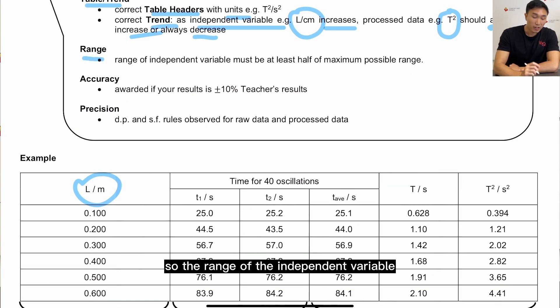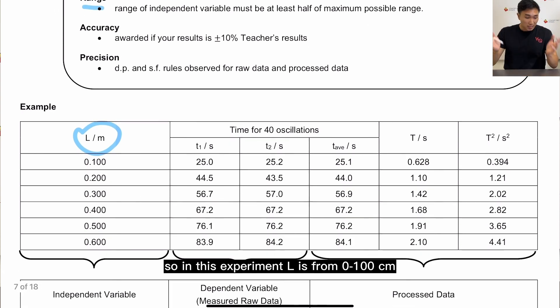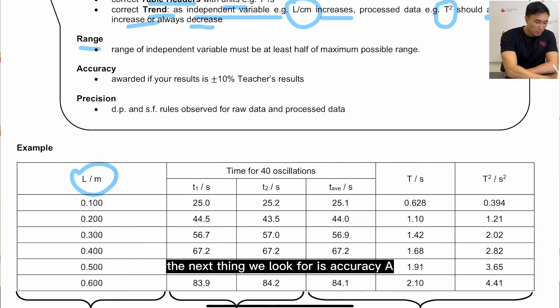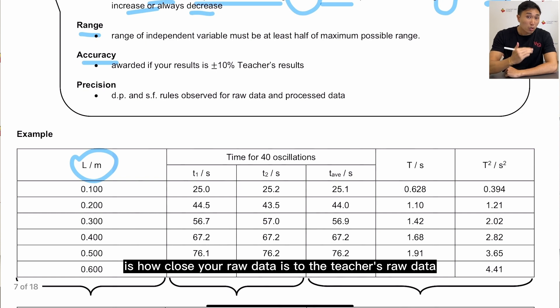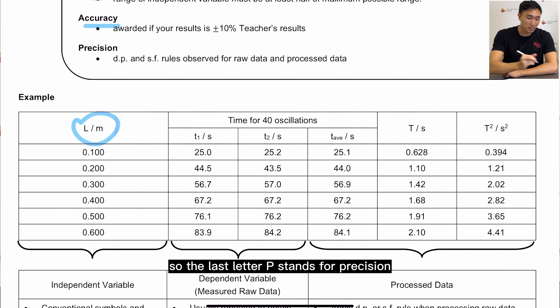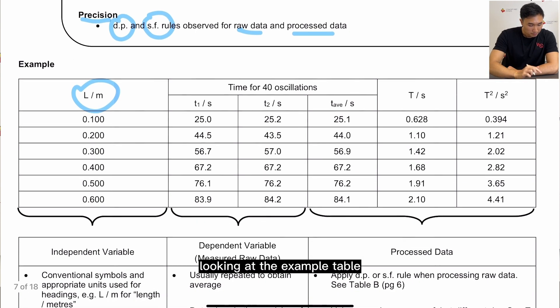So the range of the independent variable must be at least half of the maximum possible range. So let me give you an example. So in this experiment L is from 0 to 100 cm. We are using a meter rule here, so half the maximum range is minimum of 50 cm, and that should be within your data set. The next thing we will look for is accuracy, A. So accuracy is how close your raw data is to the teacher's raw data. That is something you cannot control, so the best way to score for that point is to perform good experimental technique. So the last letter P stands for precision, and it's to make sure that your raw data and your process data follows the DP and SF rules.